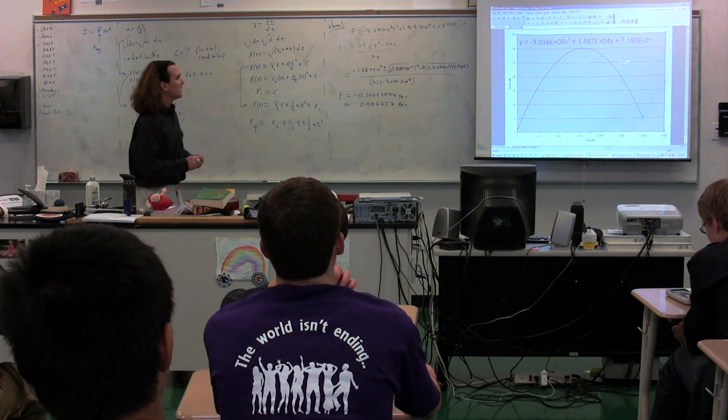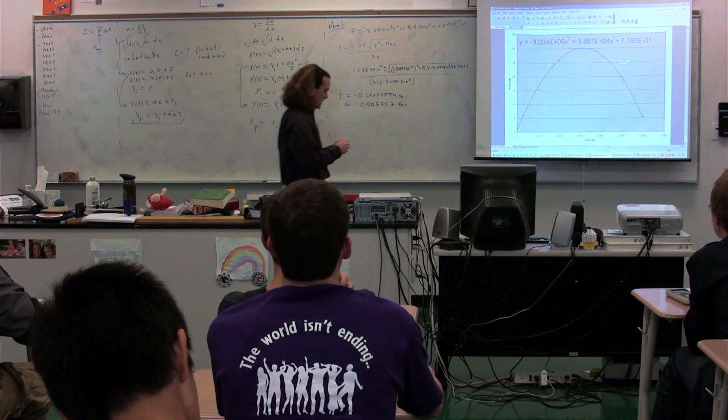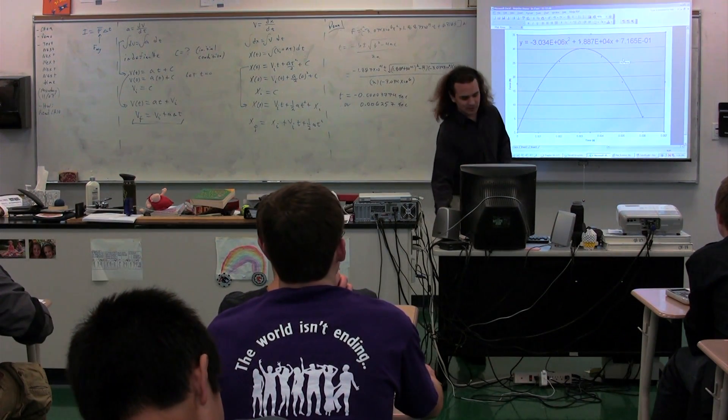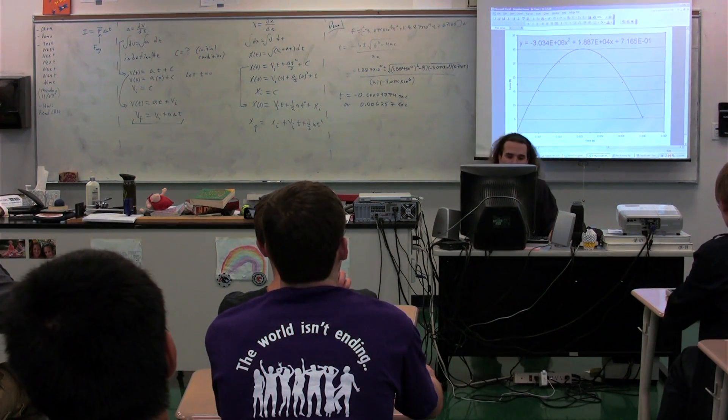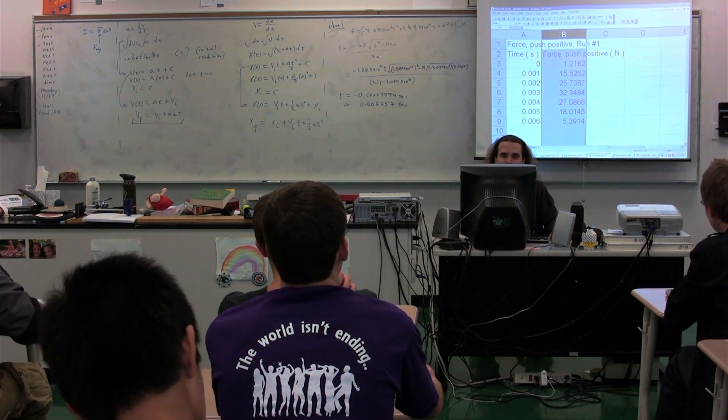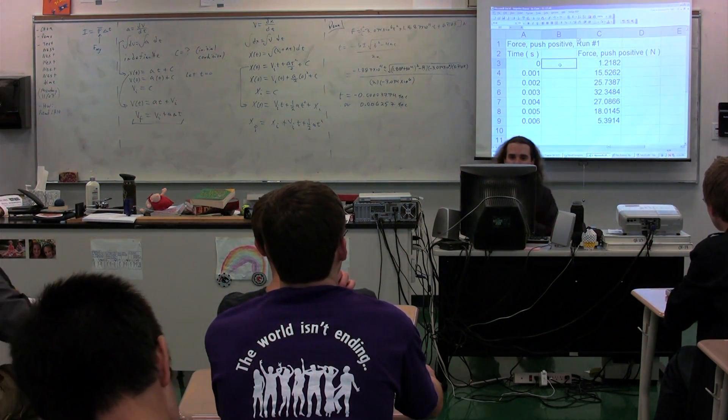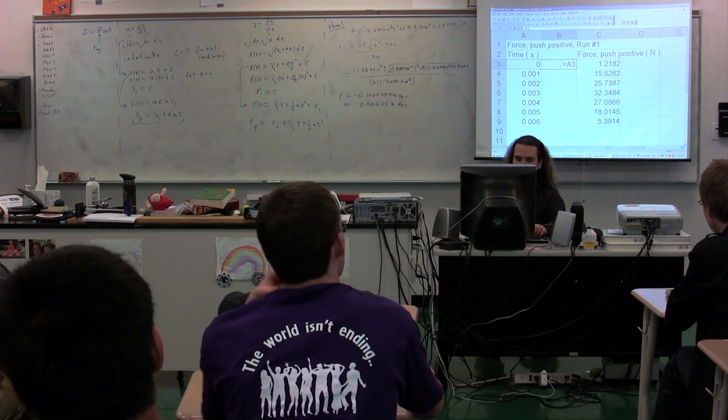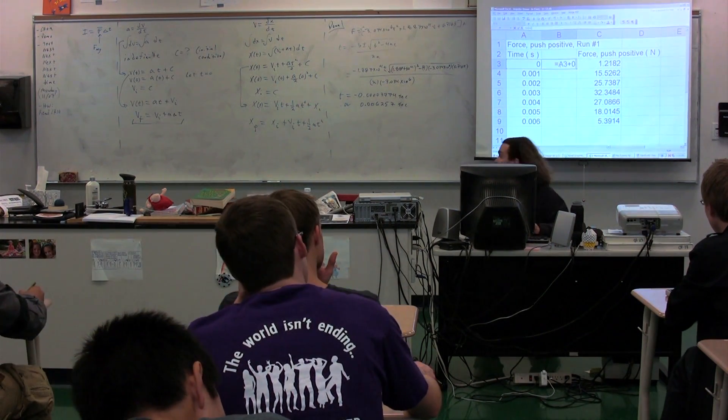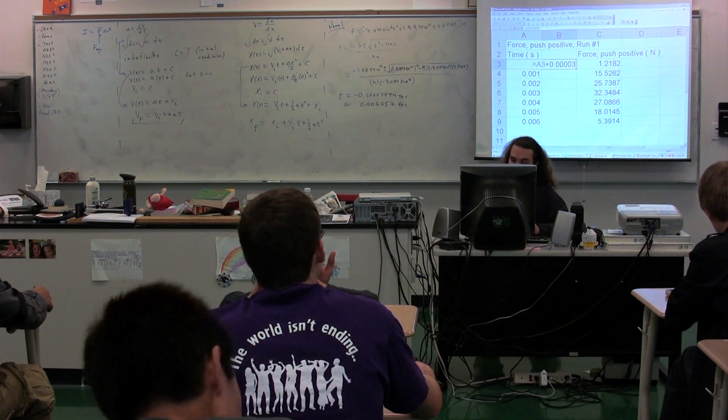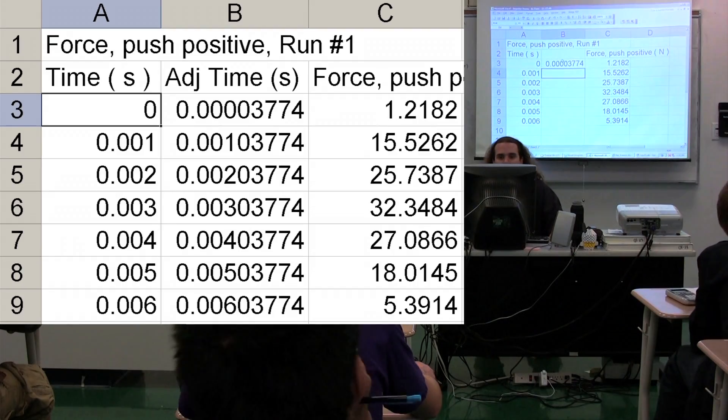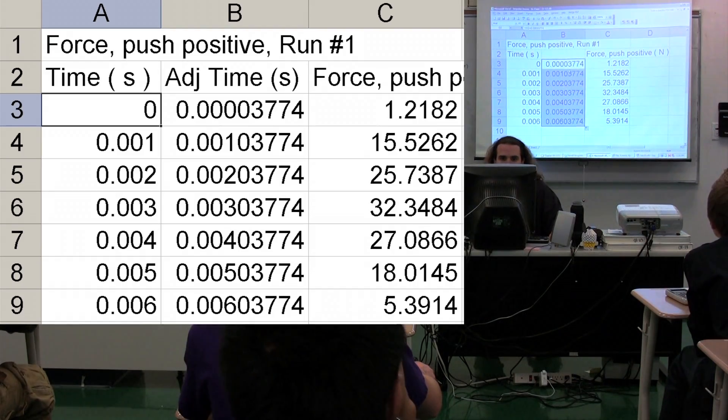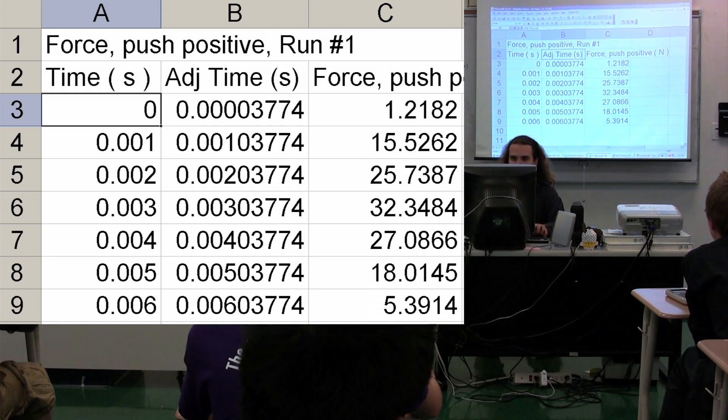And what I'm going to do is I'm going to adjust this time so that it intercepts with the, at the 0.006257. So I'm going to insert right here an adjustment to the time. So the first time is equal to this number plus our 0.003774. And what we're going to do now, this is the adjusted time in seconds.